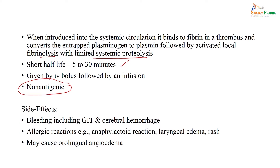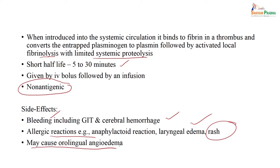One of the commonest adverse effects of alteplase is bleeding — from the gastrointestinal tract or cerebral hemorrhage. Though it is non-antigenic, there are reports of allergic reactions, particularly anaphylactic reactions — it can cause laryngeal edema or skin rash. There is also a risk of orolingual angioedema, so one must take a detailed history and be very careful about this drug.